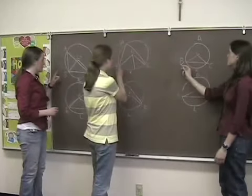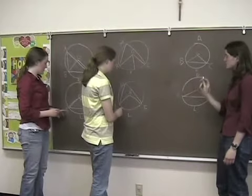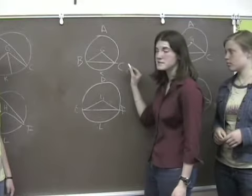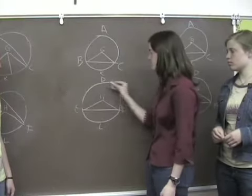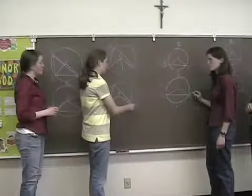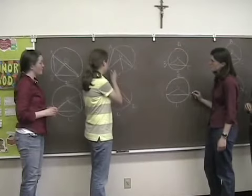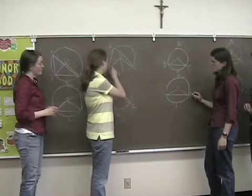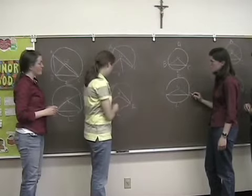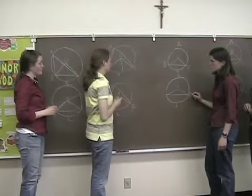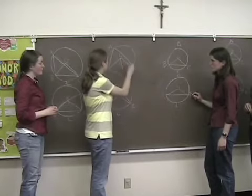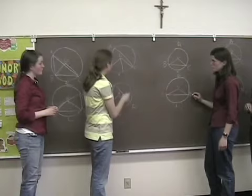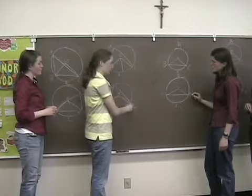Therefore the circumference B, K, C is equal to the circumference E, L, F. Therefore the circumference B, A, C which remains is equal to the circumference E, D, F which remains. But E, F is equal to B, C. Therefore B, K is also equal to B, C — the less equal to the greater — which is impossible. Therefore the angle B, G, C is not unequal to the angle E, H, F. Therefore it is equal. And the angle of A is half of the angle of B, C, and the angle of D is half of the angle of K, H. Therefore the angle of A is also equal to the angle of D.